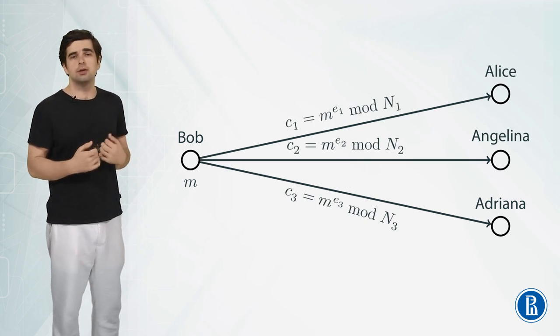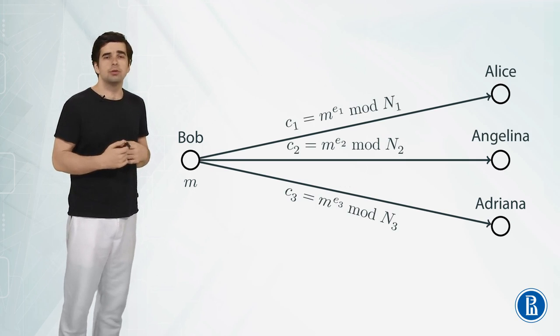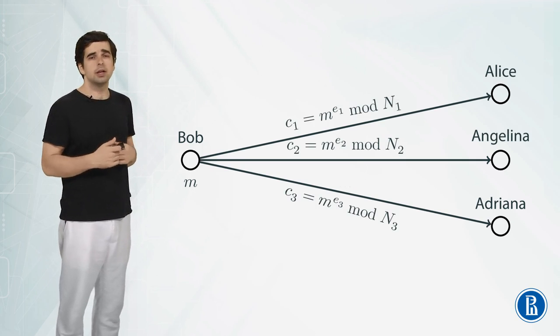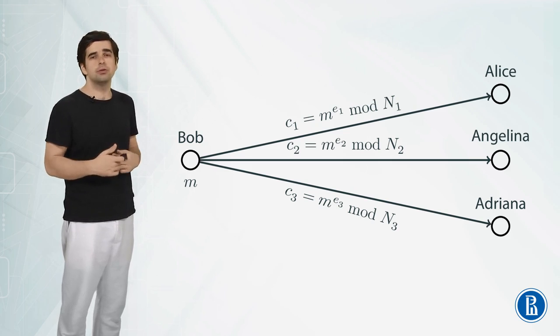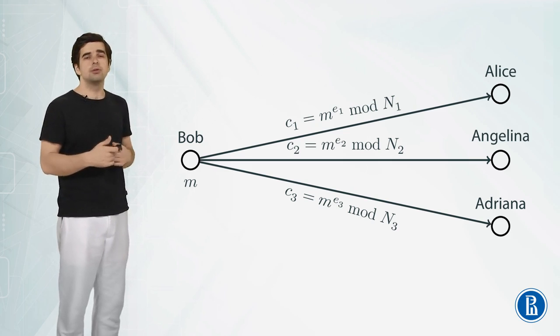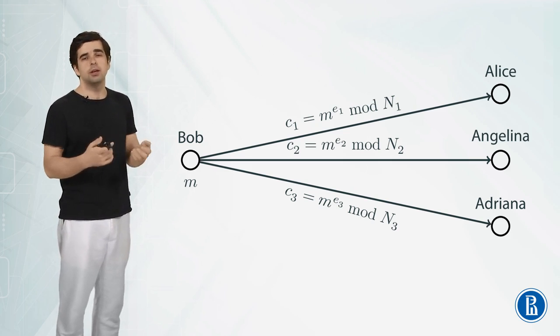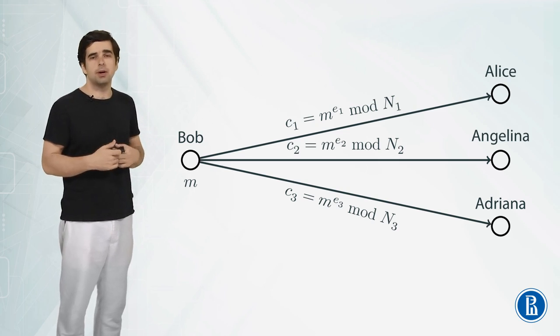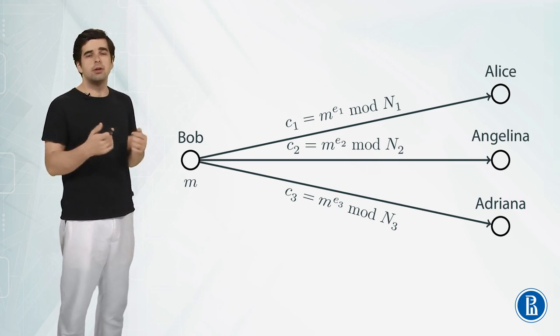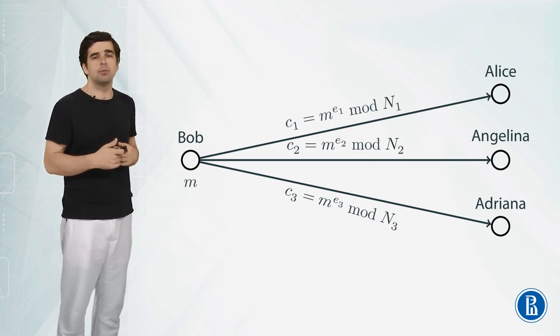So instead he will use the RSA algorithm to compute three ciphertexts. Ciphertext c₁ will be m to the power of e₁ modulo N₁ where N₁ and e₁ is the public key that Alice provides to send messages to her. c₂ is equal to m to the power of e₂ modulo N₂ and it is different. It is using a different public key N₂ e₂ and the same with the third message m to the power of e₃ modulo N₃.